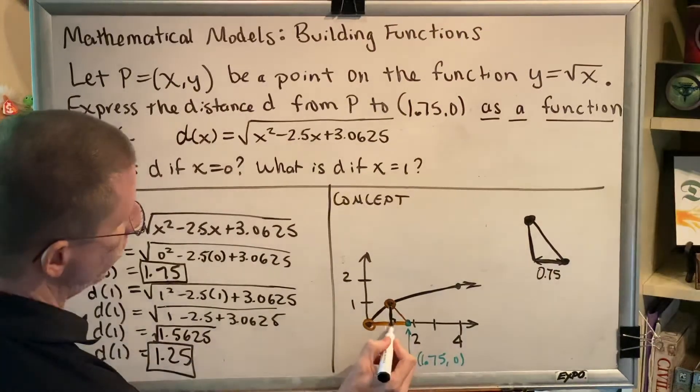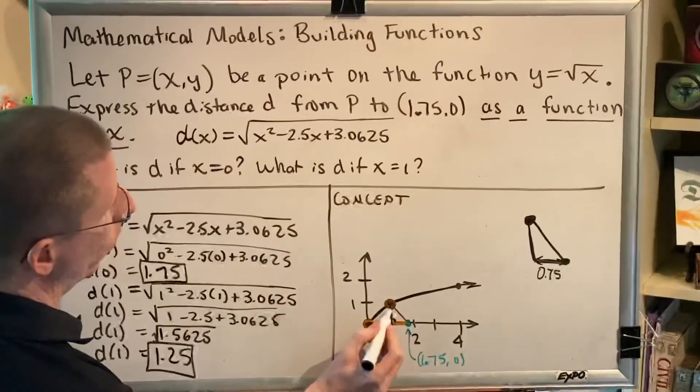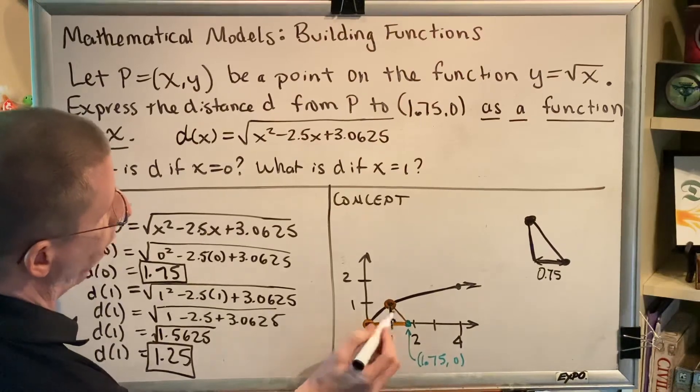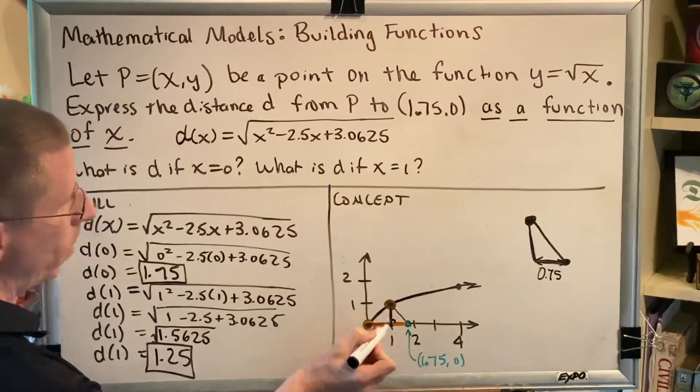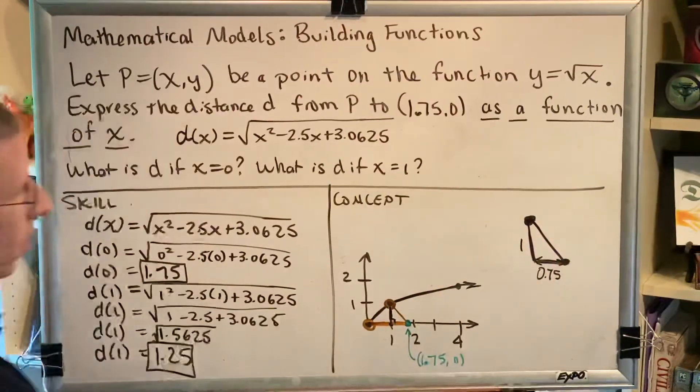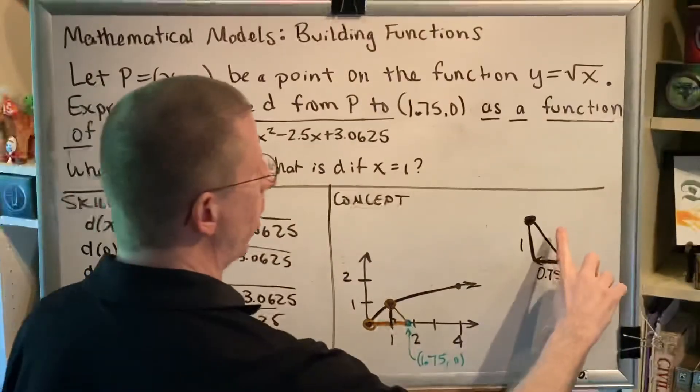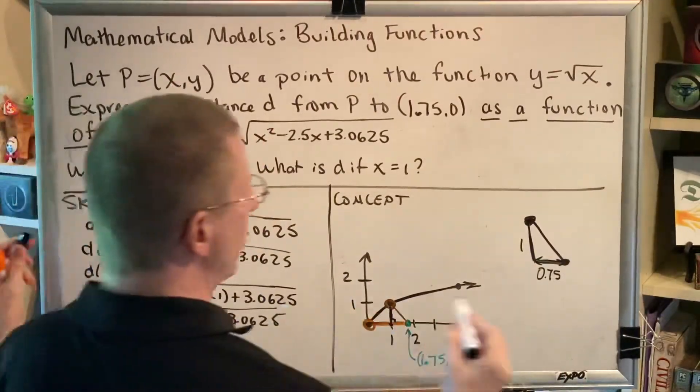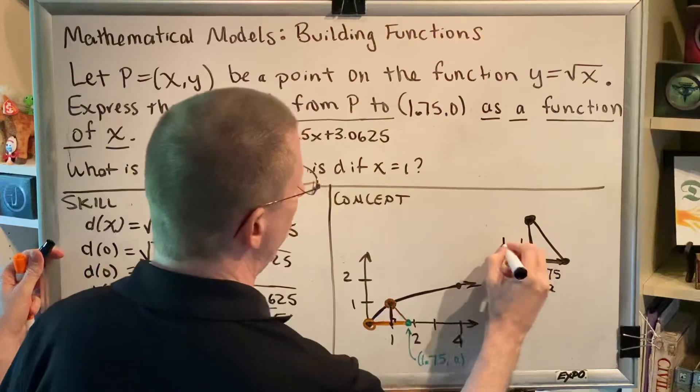This point is sitting on the x-axis at a y of 0. This point has a y of 1. So this distance is 1 minus 0, which is 1. Now we can use the Pythagorean theorem to find this distance. a squared plus b squared equals c squared.